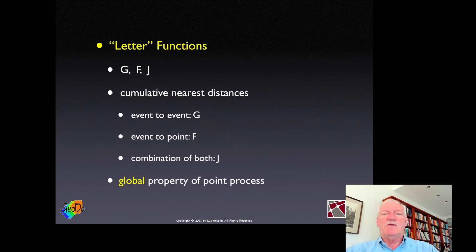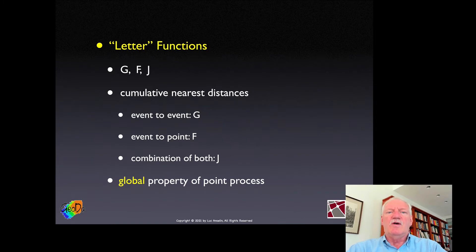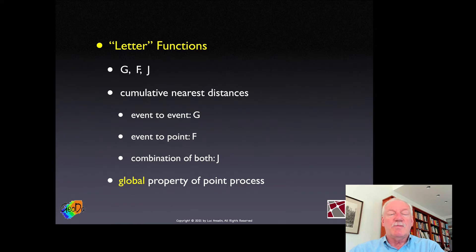These are called letter functions. The three I will briefly discuss are the G, the F, and the J function. Most of our attention will be on the G function; the others apply the same principle to a different measure of nearest neighbors. All of these are cumulative functions of nearest neighbor distances. The G function is from event to event, the F function is from the reference point to the event, and the J function combines the two in one expression.